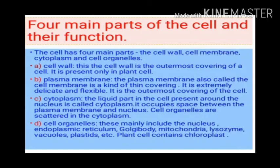The liquid part in the cell present around the nucleus is called cytoplasm. It occupies the space between the plasma membrane and the nucleus. Cell organelles are scattered in the cytoplasm. These mainly include the nucleus, endoplasmic reticulum, Golgi bodies, lysosomes, mitochondria, vacuoles, plastids, etc. Plant cells also consist of chloroplasts.